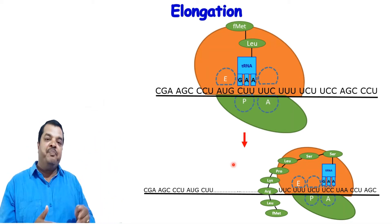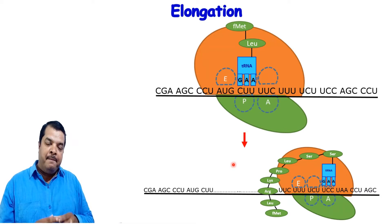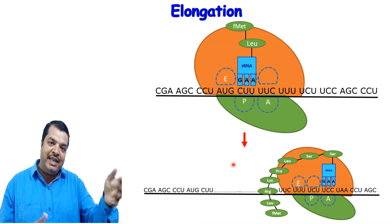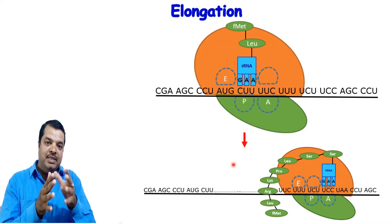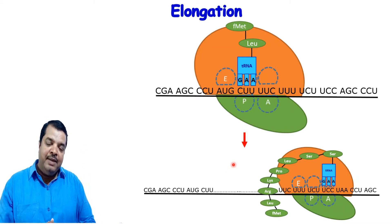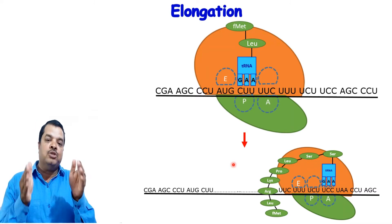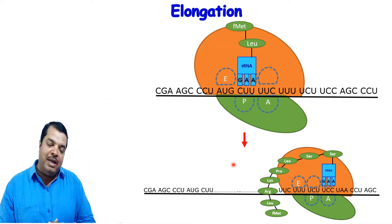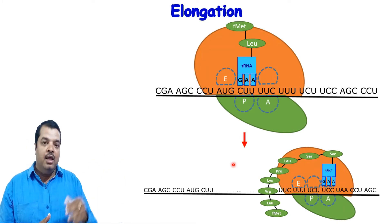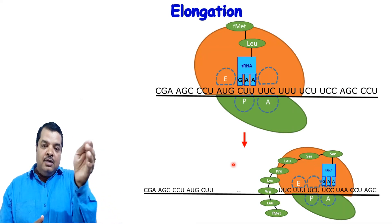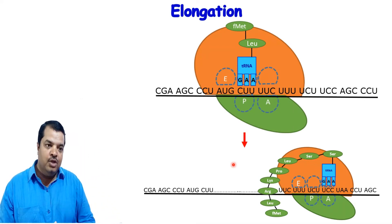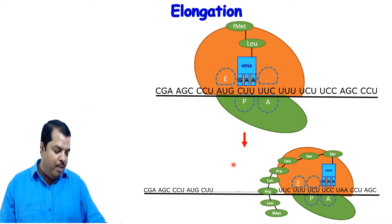If you think about 200 codons — 200 amino acids bind and form one polypeptide with 199 peptide bonds. So with 200 amino acids, elongation continues up to the termination codon. The process before the termination codon is called elongation. Now let us see the properties.